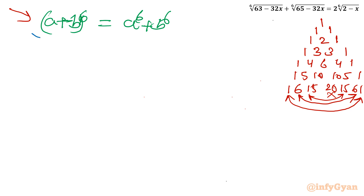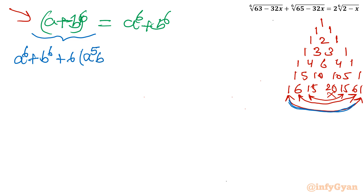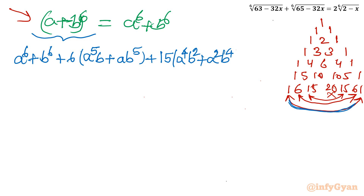Expanding the left-hand side: I write a⁶ plus b⁶ with coefficient 1, then take 6 common and write a⁵b plus ab⁵, then for coefficient 15 take 15 out and write a⁴b² plus a²b⁴ — wait, a⁴b² plus a²b⁴ — and then the last term 20a³b³. The right-hand side is a⁶ plus b⁶.